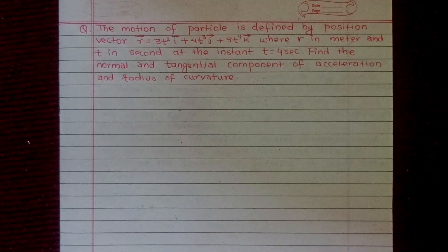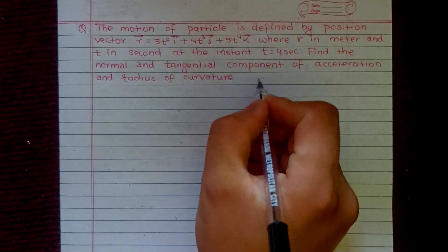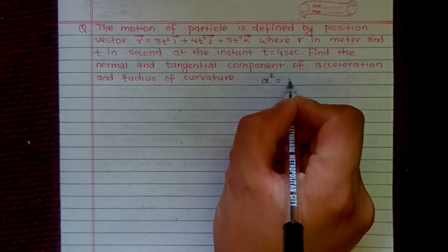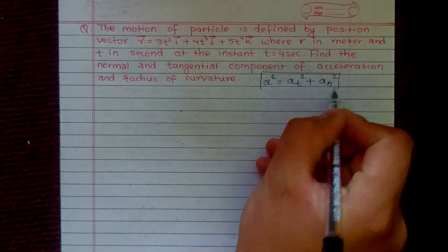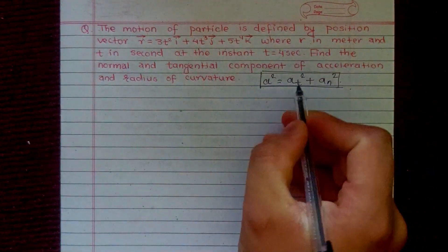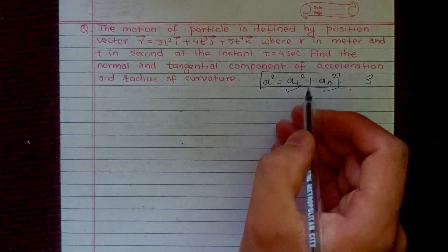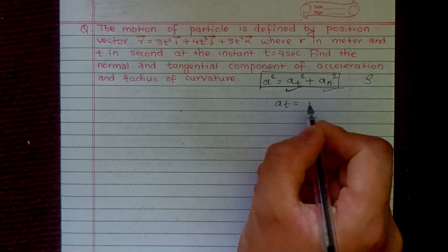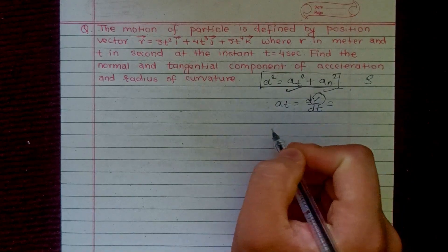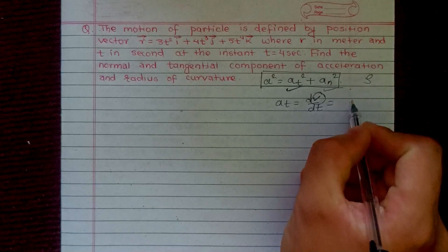We need to find the normal component of acceleration, the tangential component of acceleration, and the radius of curvature. The key relation is: a² = aₜ² + aₙ², and the radius of curvature ρ is related to the normal component of acceleration. The tangential component of acceleration aₜ equals dv/dt, where v is the magnitude of velocity differentiated with respect to time.